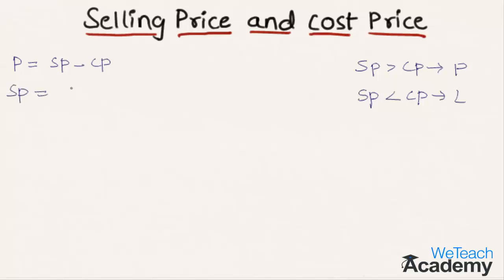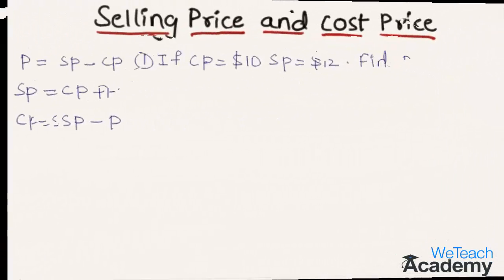We can derive the formula for the selling price using the above formula. If we transfer the cost price to the other side, we get: Selling Price = Cost Price + Profit. Similarly, we can derive the formula for the cost price — by transferring the profit to the left-hand side, we get: Cost Price = Selling Price minus Profit.